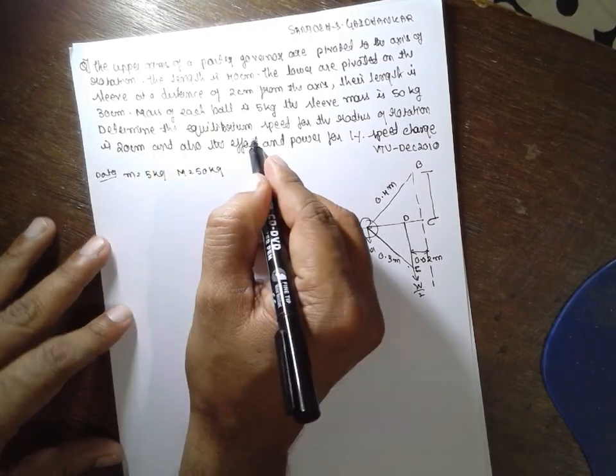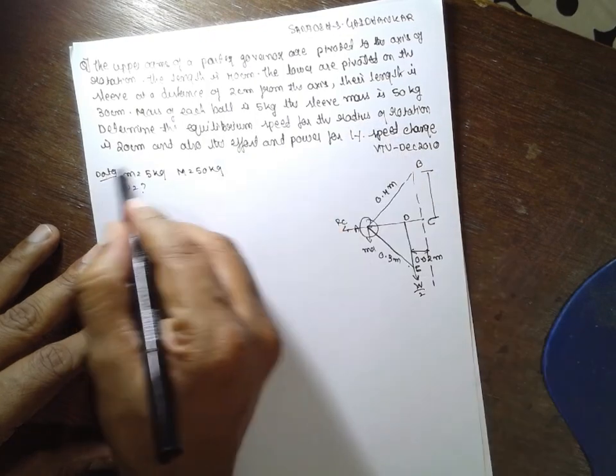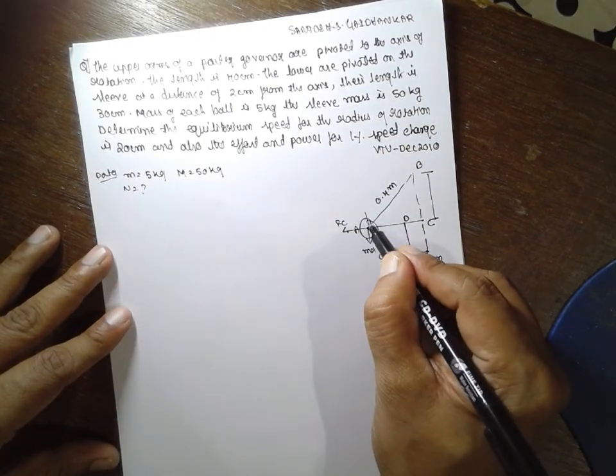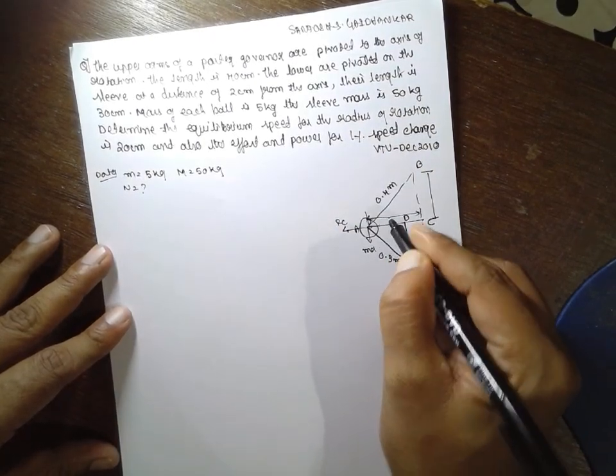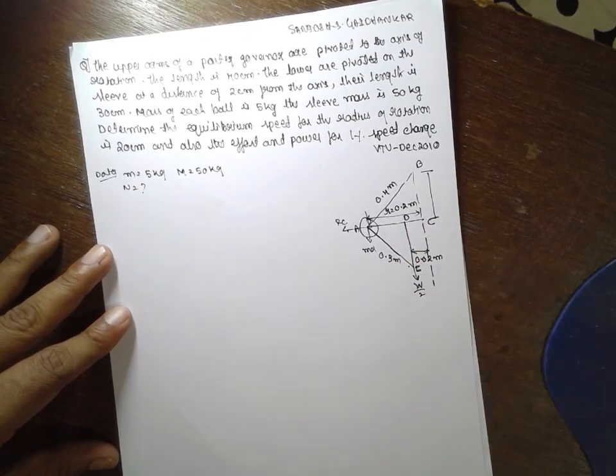Determine the equilibrium speed. We have to find out the equilibrium speed here at radius of rotation. The radius of rotation is 20 cm. This R is given here, that is 20. That is in terms of 0.2 m. In terms of meter, we have to express it as 0.2 m.